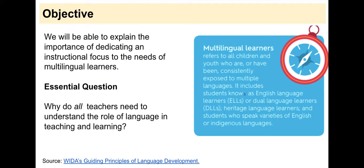We'll begin with the definition of the term multilingual learners. Multilingual learners refers to all children and youth who are or have been consistently exposed to multiple languages. It includes students known as English language learners or dual language learners who speak varieties of English or indigenous languages.